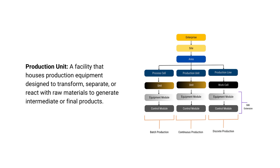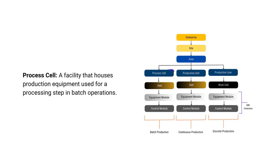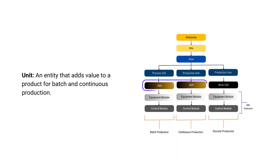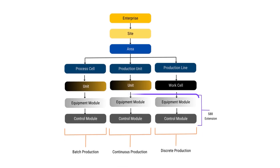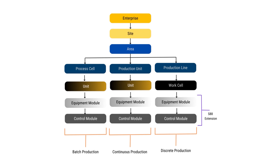Production unit: this is a facility that houses production equipment designed to transform or react with raw materials to generate intermediate or final products. A process cell: this is a facility that houses production equipment used for a processing step in batch operations. A unit: this is an entity that adds value to a product for batch and continuous production.